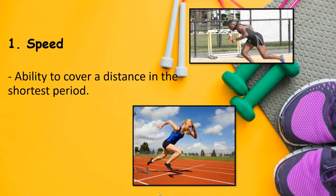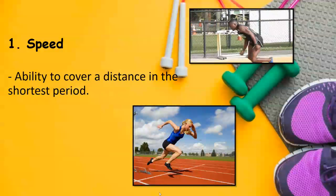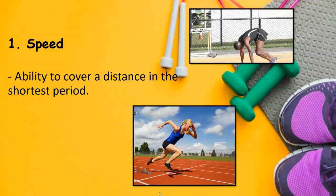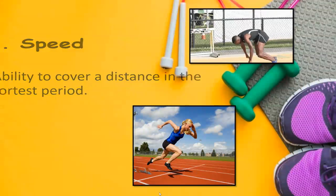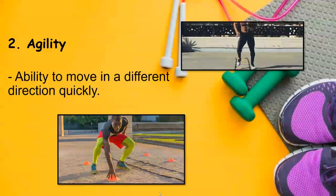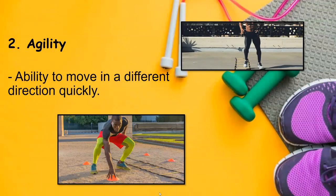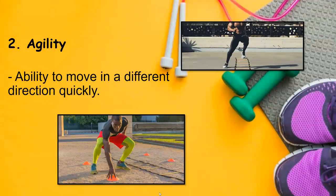The first one is speed — the ability to cover a distance in the shortest period; it is how fast you can move from point A to point B. The second one is agility — being able to change directions quickly. Unlike speed, which goes from point A to point B, agility involves moving from point A to point B, point C, point D, and so on.